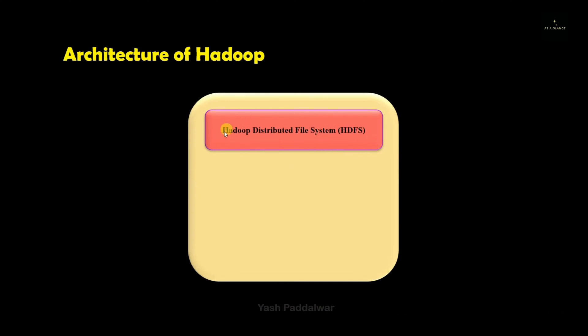So the first component inside the architecture of Hadoop is the HDFS which is Hadoop Distributed File System. Now what it is used for? It is used for storage of the data in a distributed manner. And this distributed data will be stored in the form of blocks. There will be a specific size of each block.